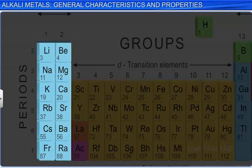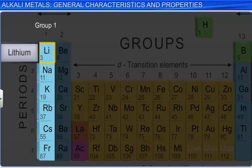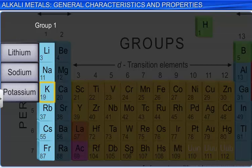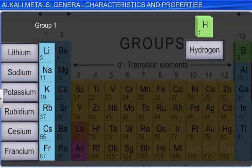The metals in group 1 include lithium, sodium, potassium, rubidium, cesium, and francium. Note that hydrogen is not included here as it typically does not exhibit metallic behavior.